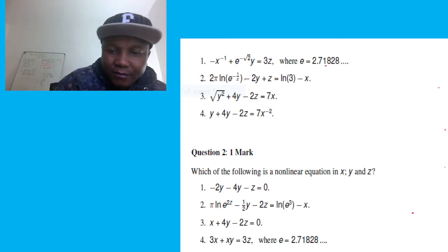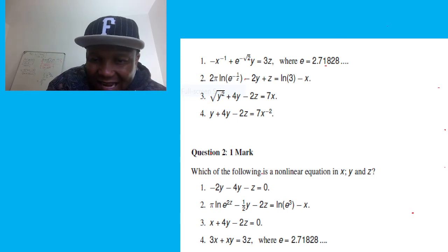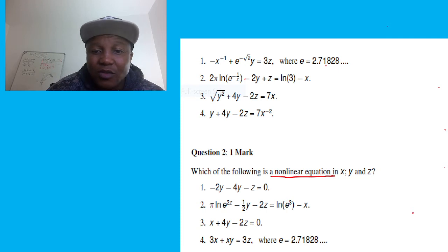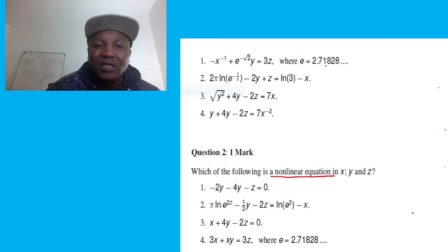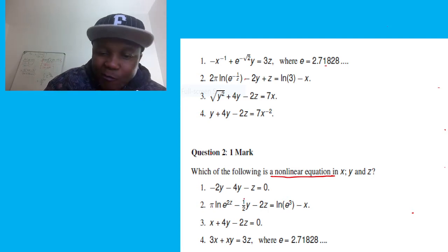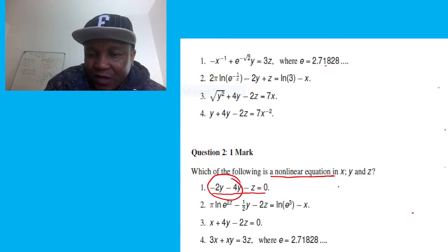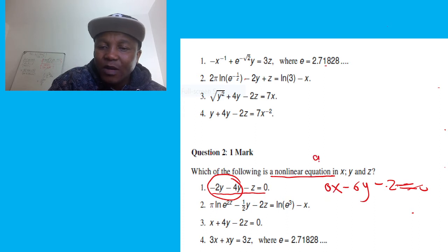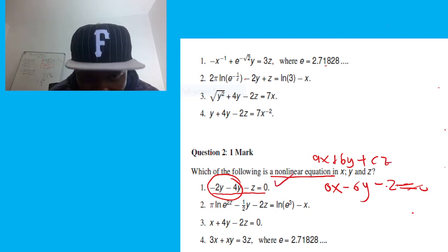Now for the second question, we need to determine which equation is non-linear. I'll go quickly. The first equation here is linear because the terms give us 0x − 6y − z = 0. That's in the form ax + by + cz = 0, so yes, this is linear.